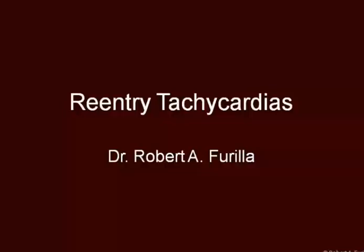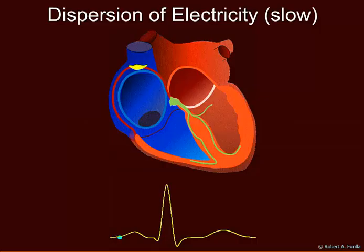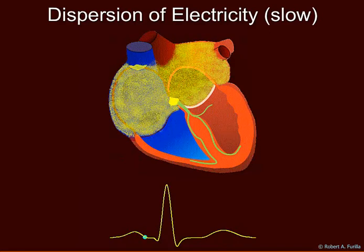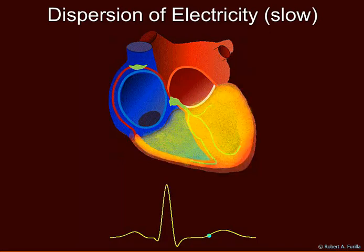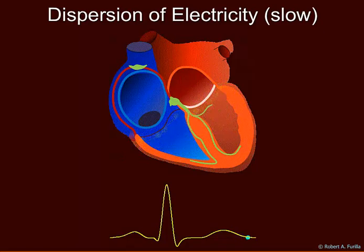I'm going to discuss re-entry tachycardias. I'm not going to talk about all of the tachyarrhythmias, just the re-entry circuit. This is a slow motion animation of the electrical conduction on the heart. It begins at the SA node, travels around the atria, down the AV node to the ventricles, and now repolarization.